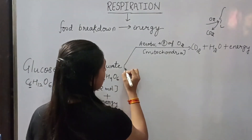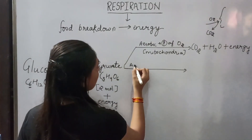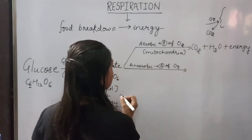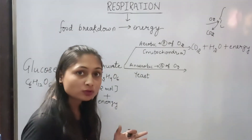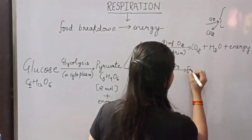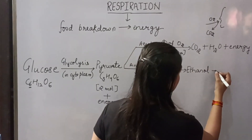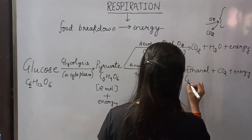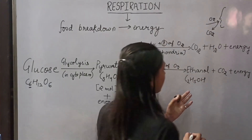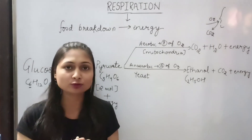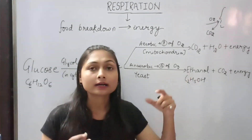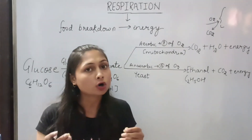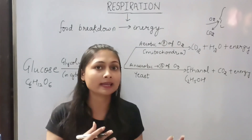In anaerobic respiration, the end products will be ethanol plus carbon dioxide plus energy. Ethanol's formula is C2H5OH, which is a two-carbon molecule. Pyruvate, which is a three-carbon molecule, breaks down into ethanol. Alcohol production also occurs in the process of fermentation, and these cells performing anaerobic respiration carry out alcohol production.